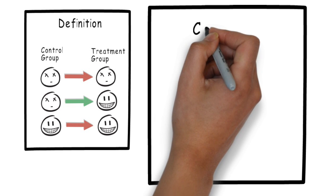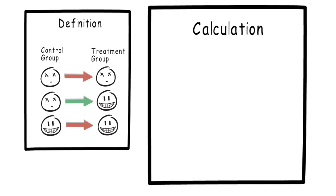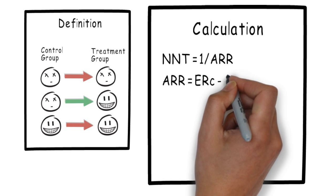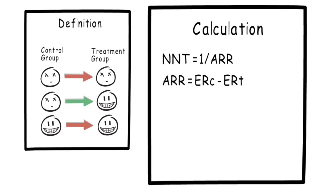How we calculate the NNT from more complex numerical data is pretty straightforward. The number needed to treat is one over the absolute risk reduction. What is the absolute risk reduction you may ask? Well, it is the event rate in the control group minus the event rate in the treatment group.